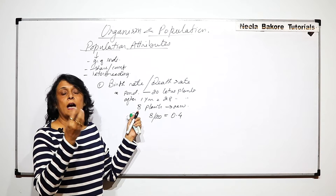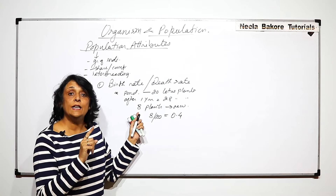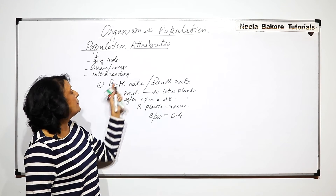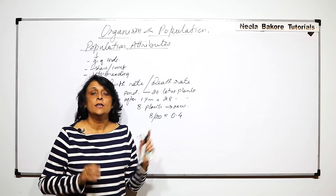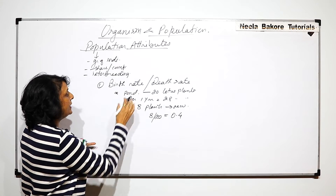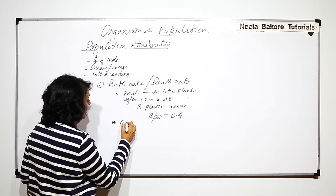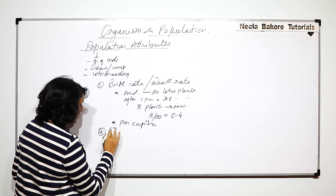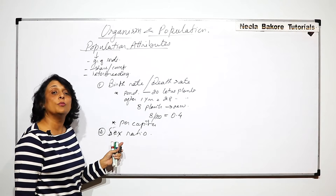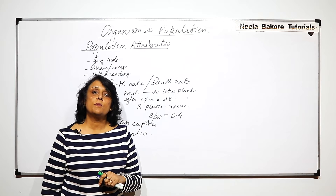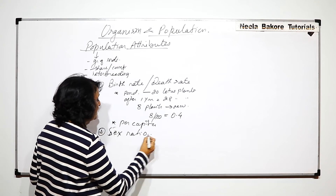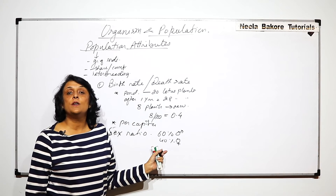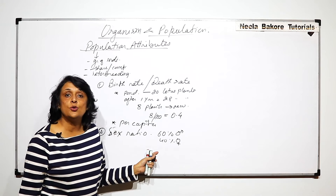When we say a new organism is born, we are talking about one individual. When we calculate the rate, we are talking about a group of similar organisms able to interbreed and how many new ones get added. This is a population attribute, and normally the rate is expressed per capita. The next attribute is sex ratio — in a given population, what is the percentage of males and what is the percentage of females. For example, 60% males and 40% females, though this varies depending on the population being studied.